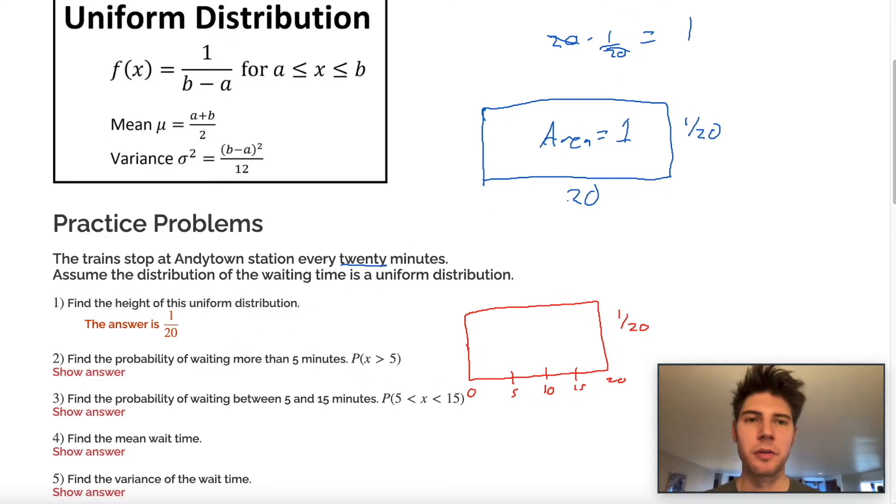They want to know find the probability of waiting more than five minutes. Well, that's going to be everything greater than this right here. So we want to know what is probability of all of this stuff happening. Well, it's just going to be a base times height situation.